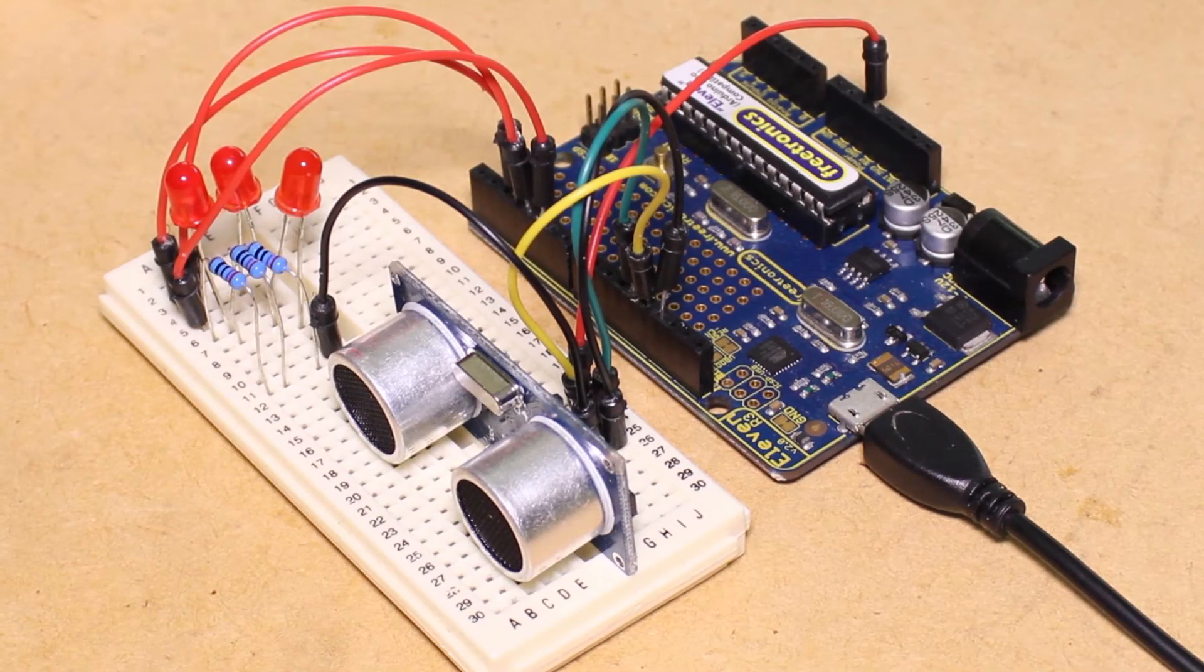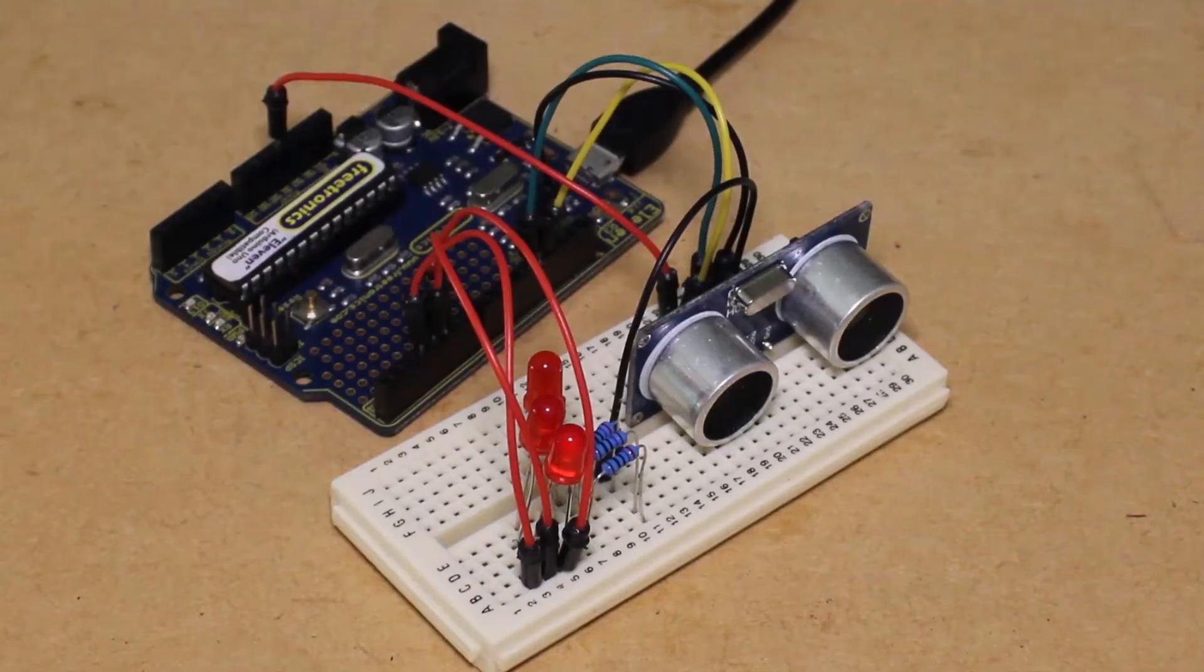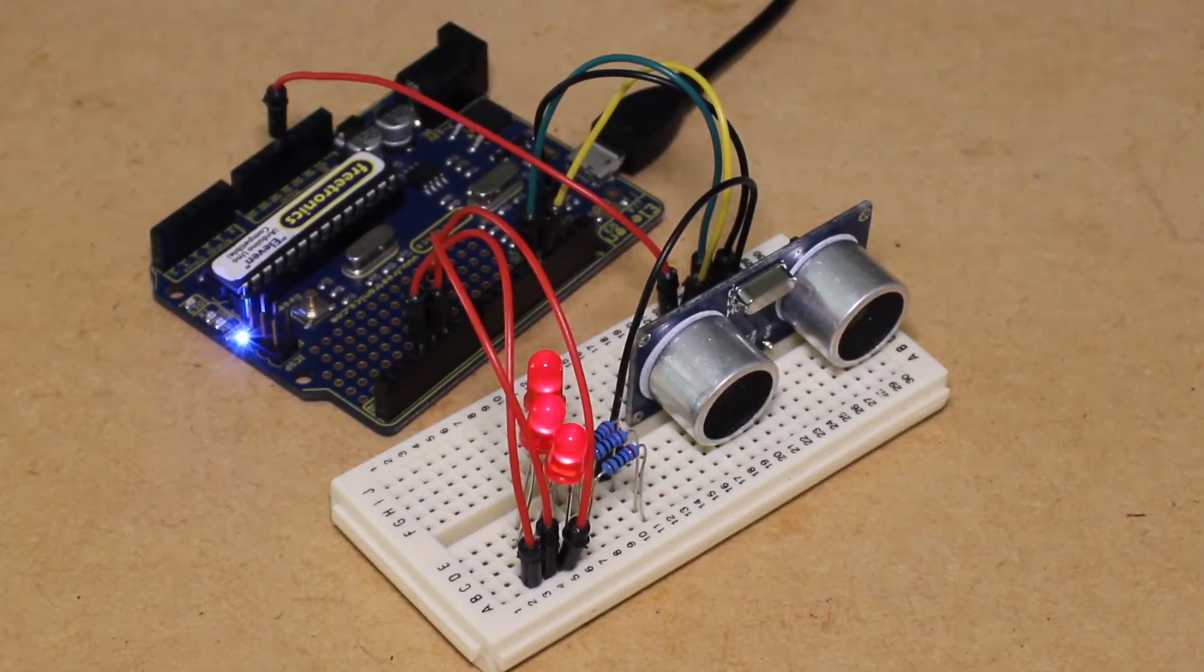We can then upload the code to the Arduino using the USB cable. Then depending on how far an object is away from the sensor, the LEDs will light up accordingly.